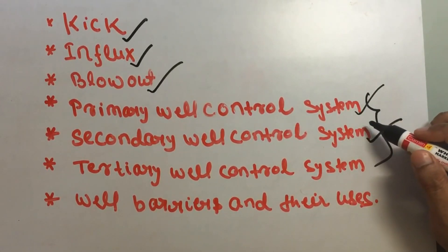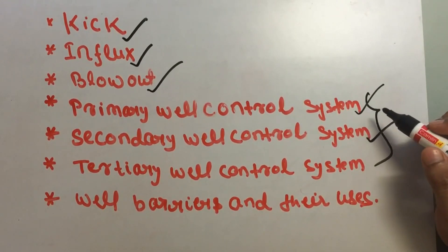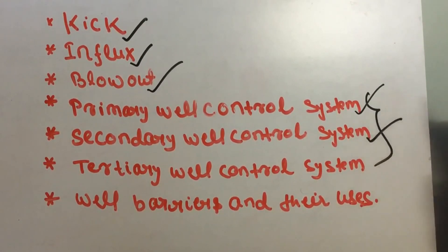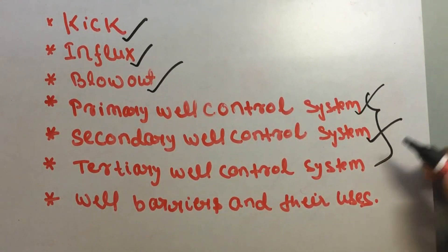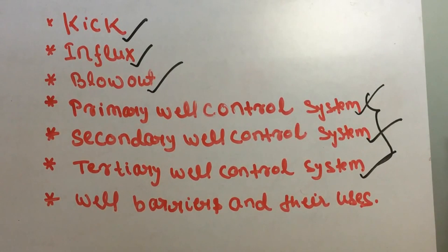If for any reason both the primary and secondary well control systems fail, then a blowout will occur. At that time we use the tertiary well control system.